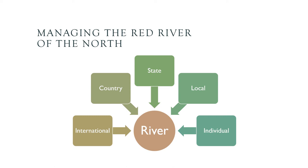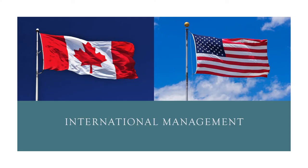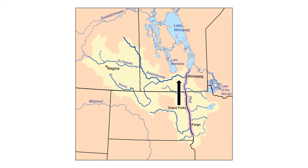The management of the Red River is complicated because of the many jurisdictions that have authority over different parts of the river. The Red River of the North spans two countries, Canada and the United States. As such, water management enters into the realm of international relations. The main stem of the Red crosses the international border as it moves from the United States to Canada.